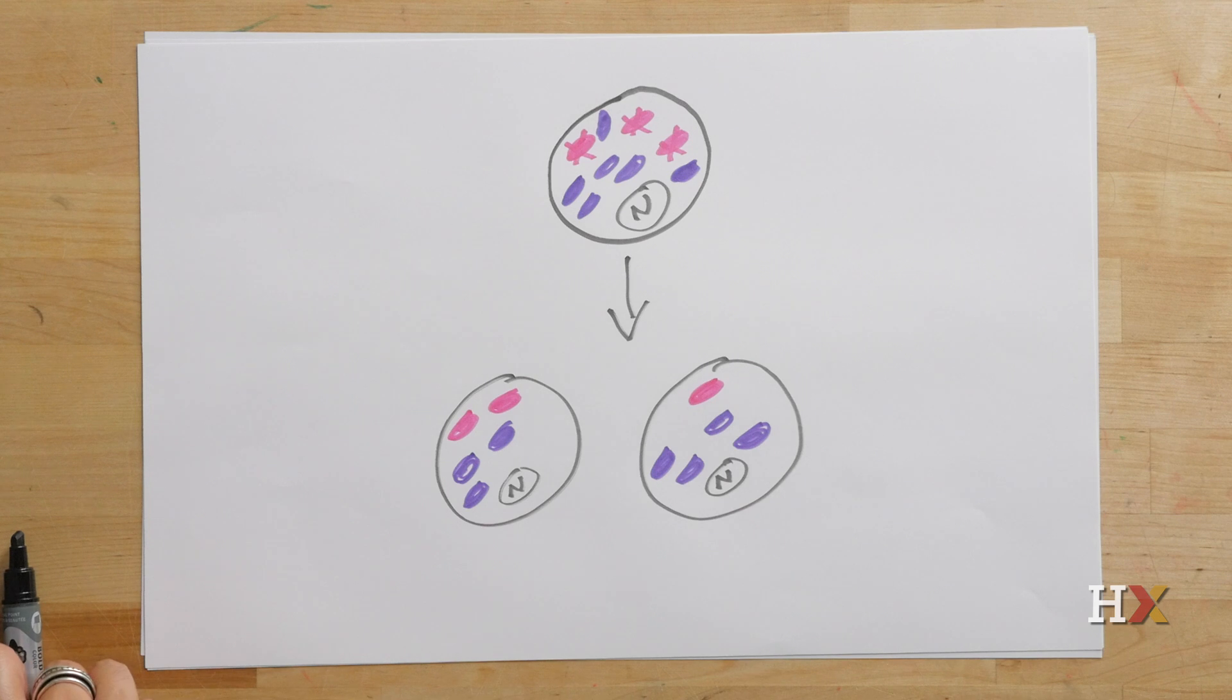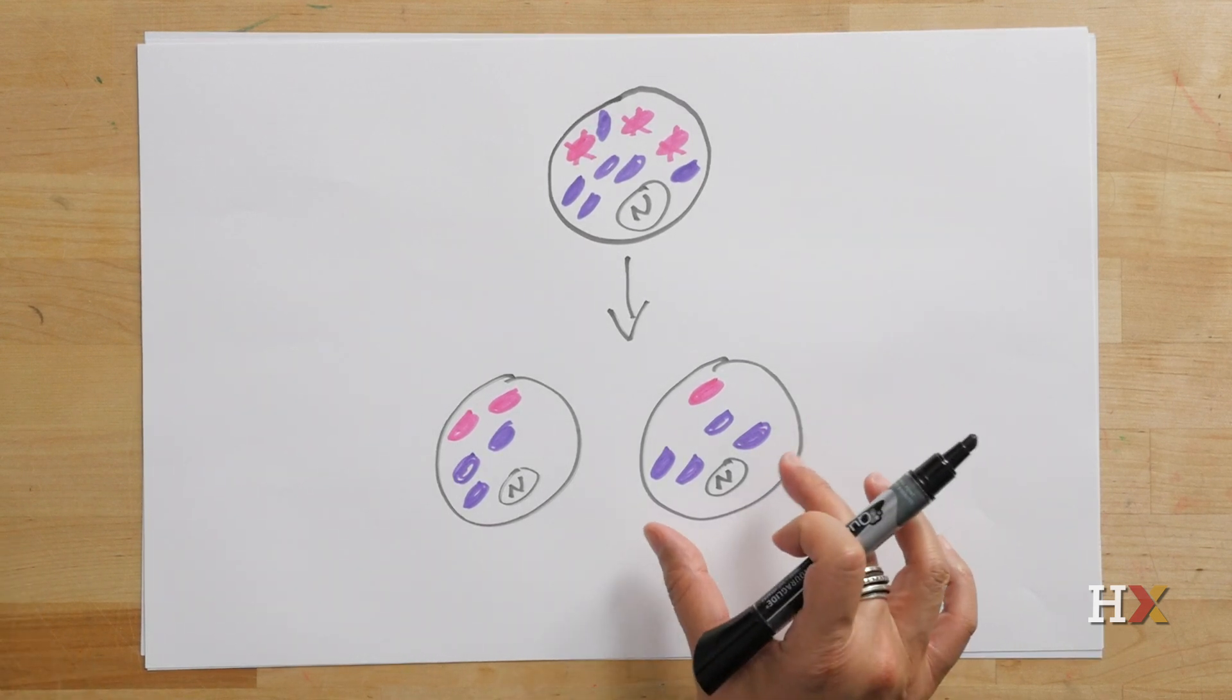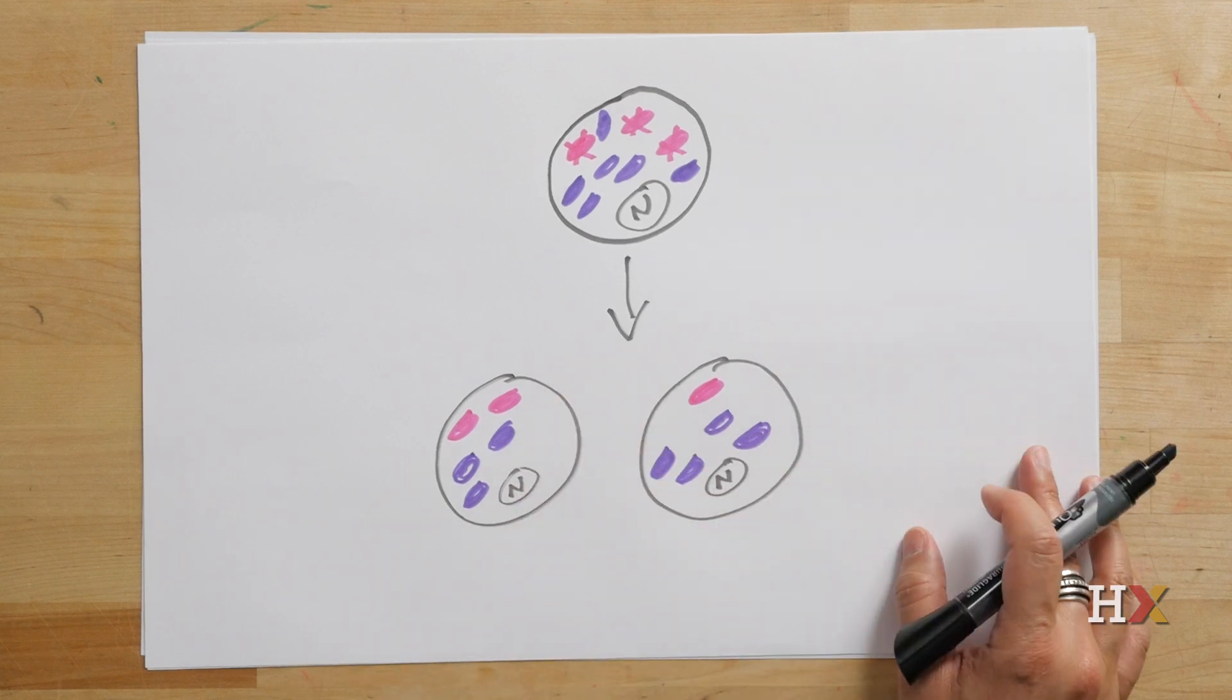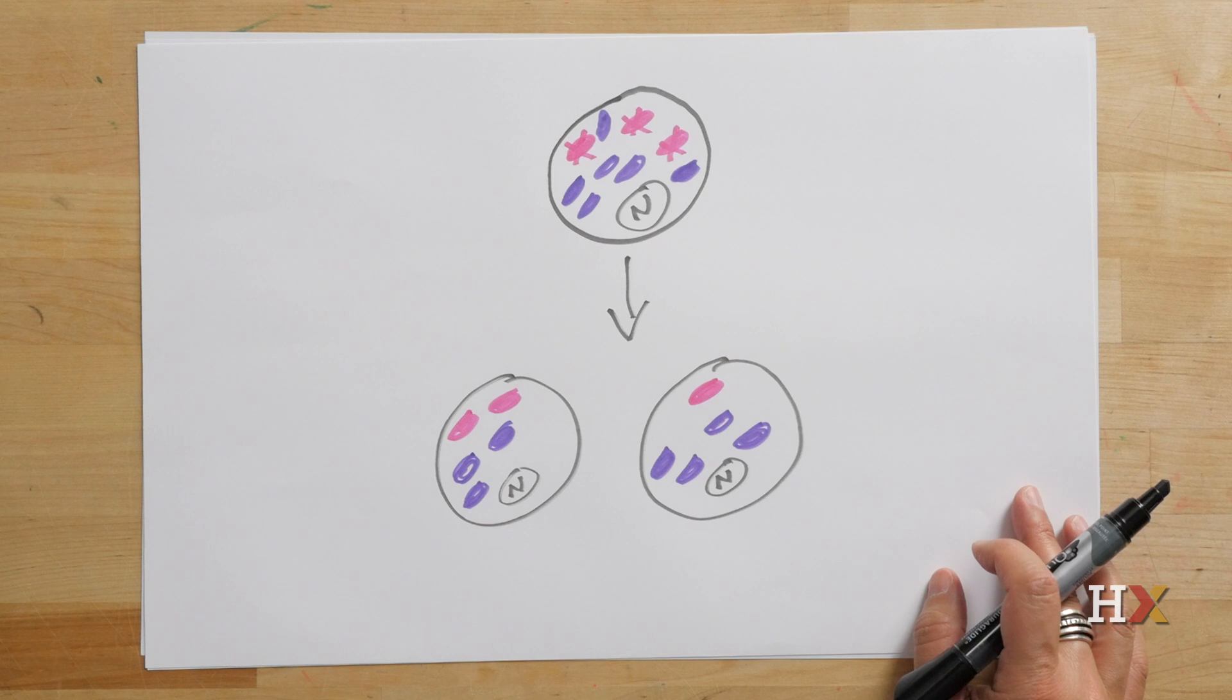What this means is that the quantity, the relative ratio of normal to defective mitochondria, is quite different if you compare these two egg cells. So depending on which one is fertilized, the resulting embryo may have either a significantly greater number of diseased mitochondria or defective mitochondria versus less.